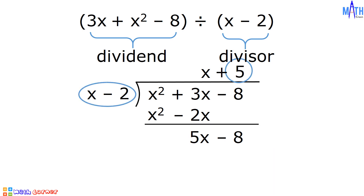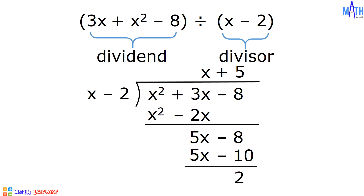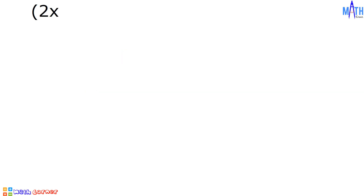5 times x is equal to 5x. 5 times negative 2 is equal to negative 10. Let us subtract. 5x minus 5x is equal to 0. Negative 8 minus negative 10 is equal to positive 2. The quotient is x plus 5 and the remainder is equal to 2. We can write the answer as x plus 5 plus 2 divided by x minus 2, where x plus 5 is the quotient, 2 is the remainder, and x minus 2 is the divisor.